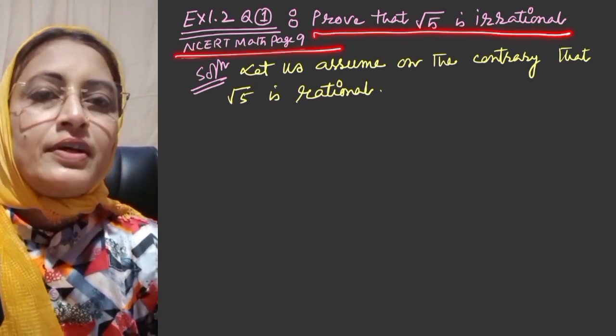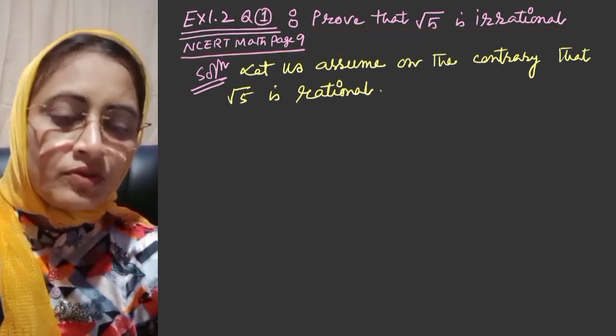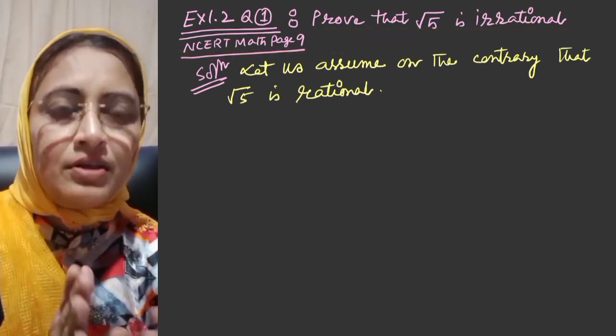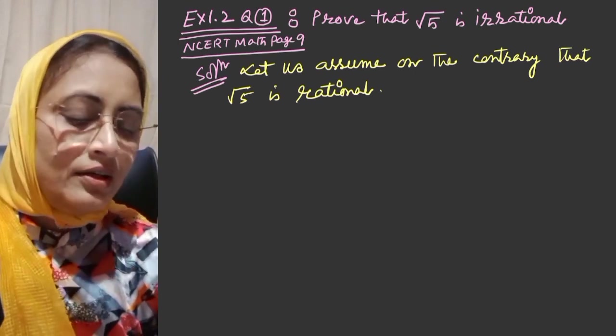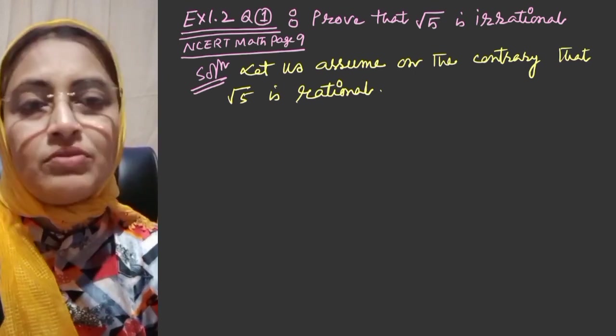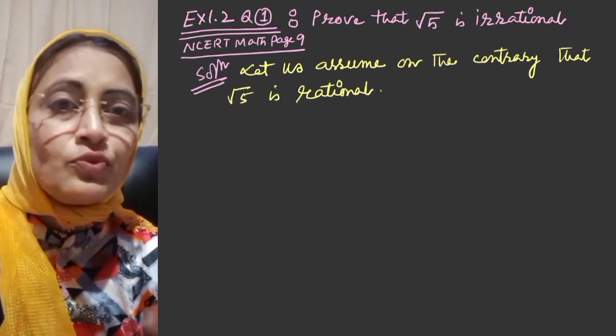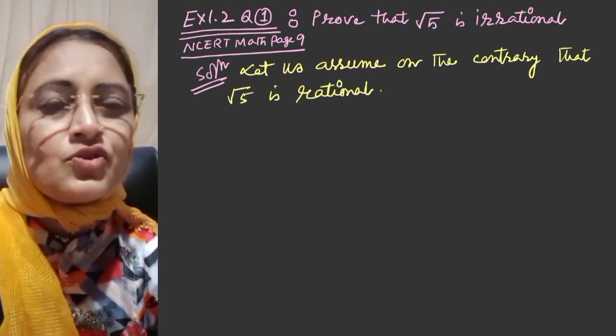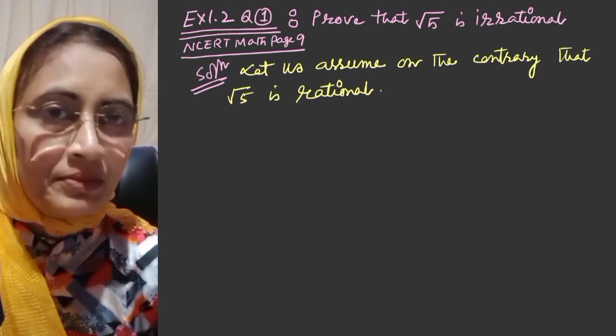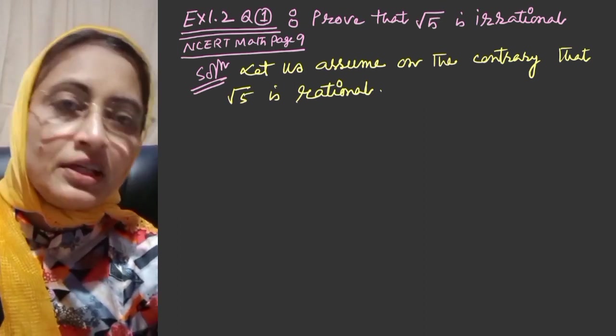To solve this problem, we'll use the method of contradiction. Method of contradiction means we'll assume that root 5 is rational, and after doing the sum we'll see that it is not fulfilling the properties of rational number.